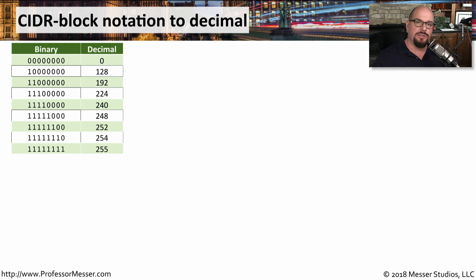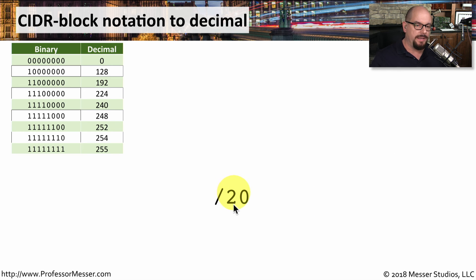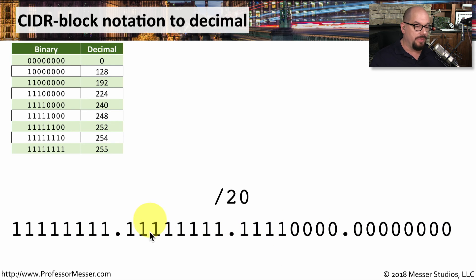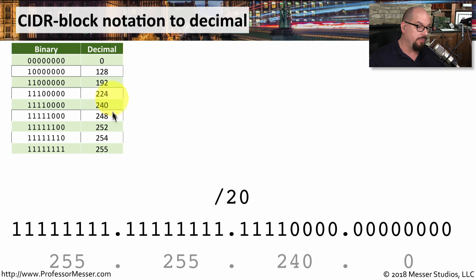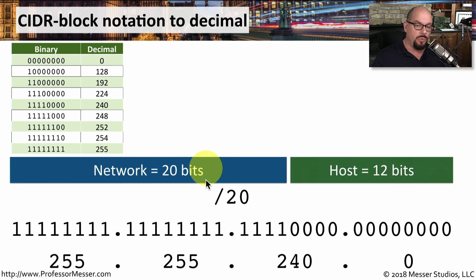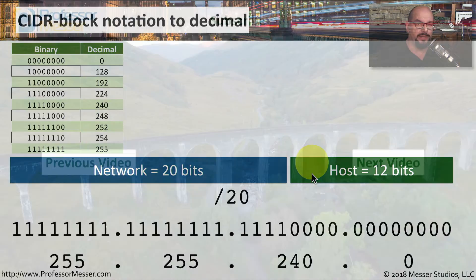Let's do one last conversion to see if we've really got it. We'll do a slash 20 subnet mask. Writing this out in binary form with 20 ones and the rest zero, we know that all ones is 255, and four ones and four zeros — looking at our chart — is 240. So our subnet mask is 255.255.240.0, making the network 20 bits long and the host 12 bits long.